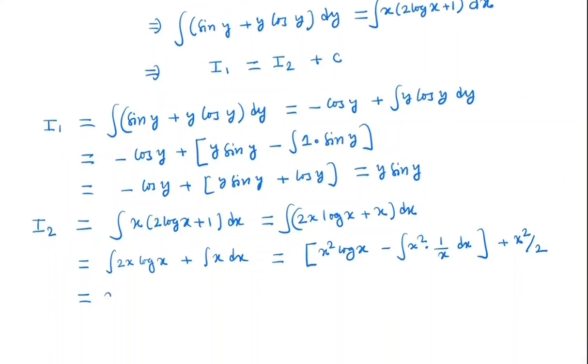So we have x squared log x minus integral x dx plus x squared by 2. So x squared log x minus x squared by 2 and plus x squared by 2, we have x squared log x.